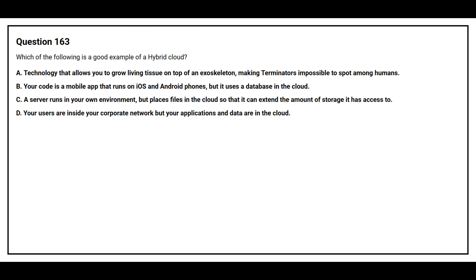Option C: A server runs in your own environment, but places files in the cloud so that it can extend the amount of storage it has access to. Option D: Your users are inside your corporate network, but your applications and data are in the cloud.